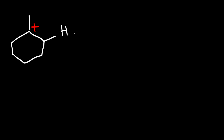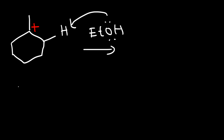The last thing we need to do is form the double bond. We use ethanol as a weak base to take away a hydrogen atom. This gives us the most stable alkene in this example — the major product.